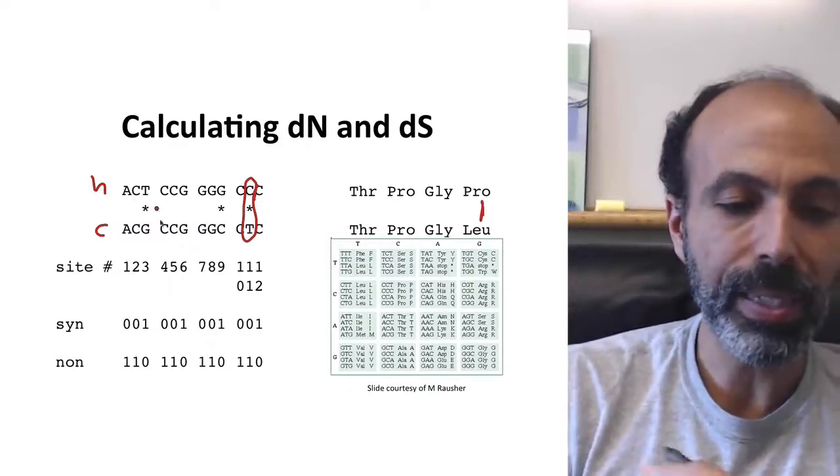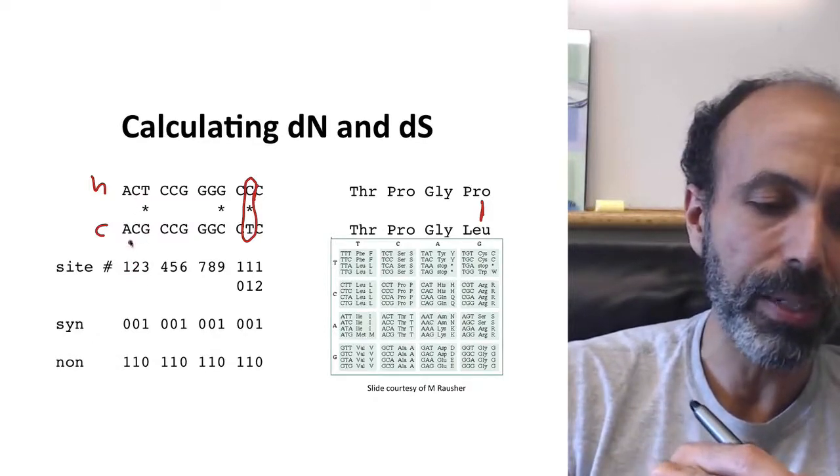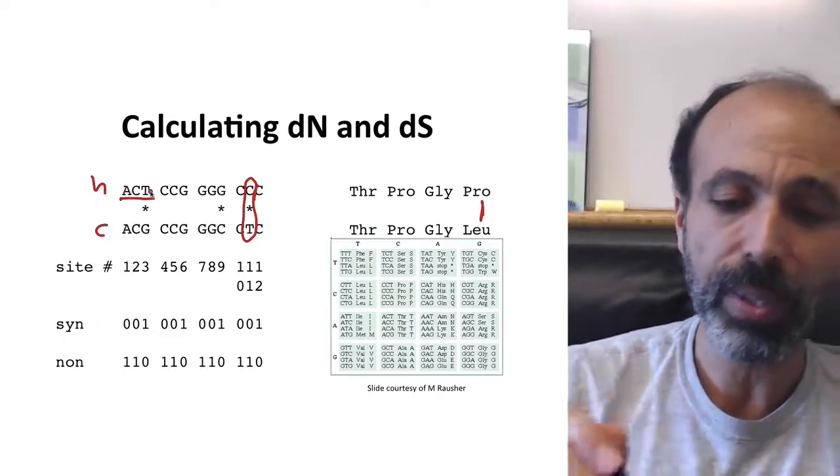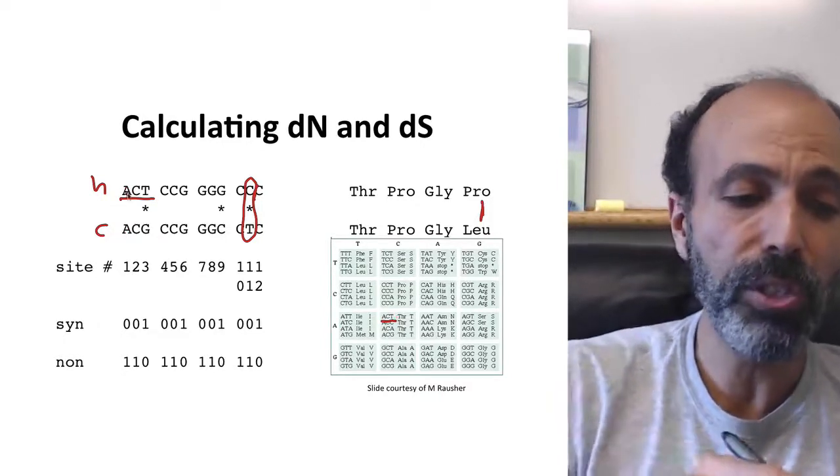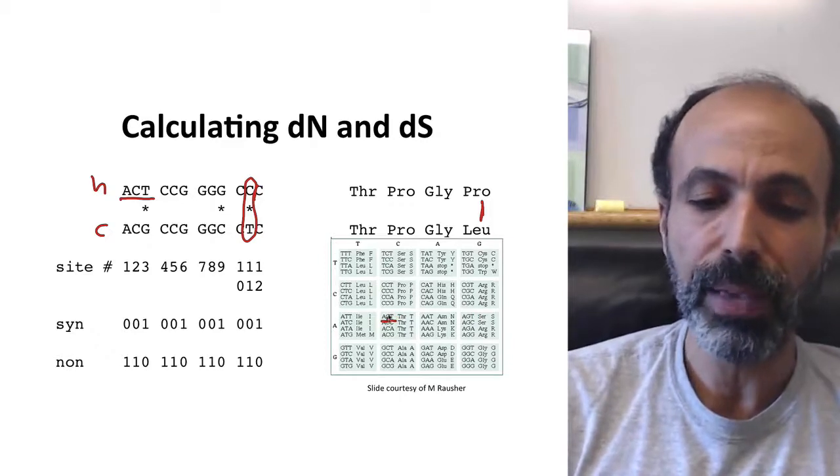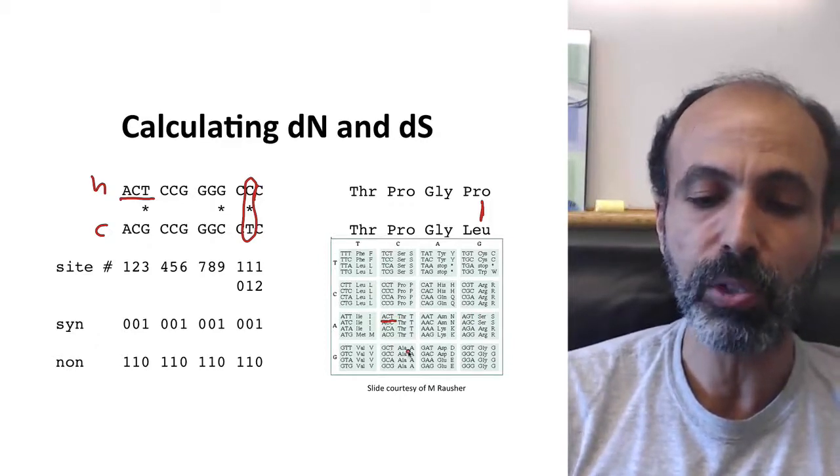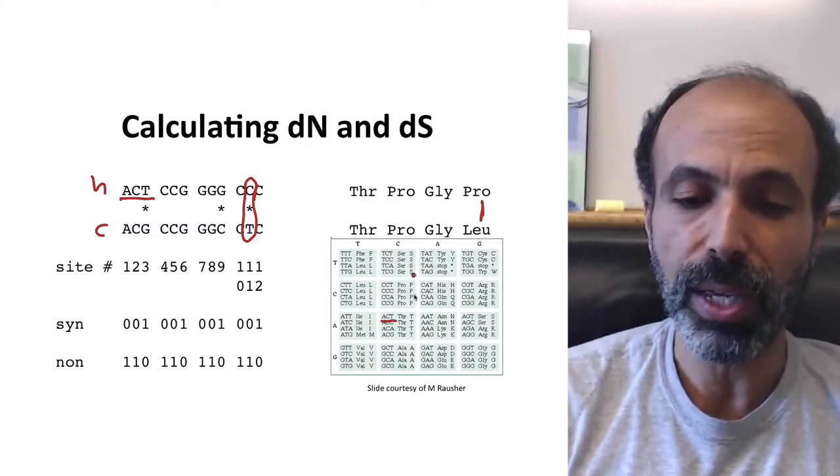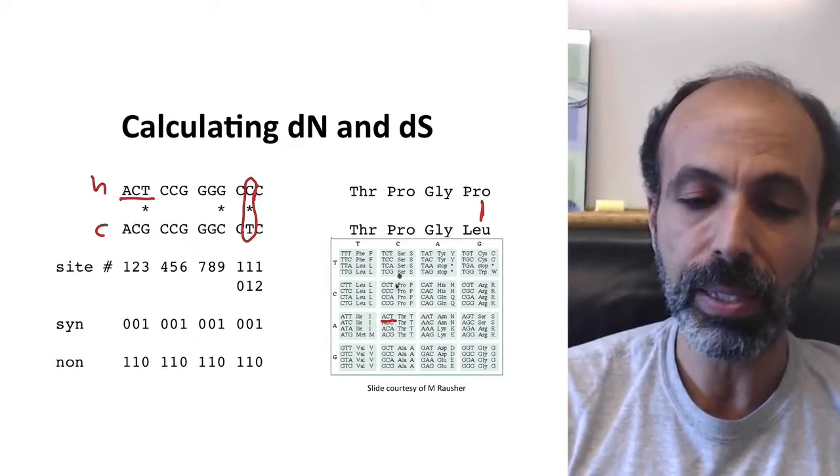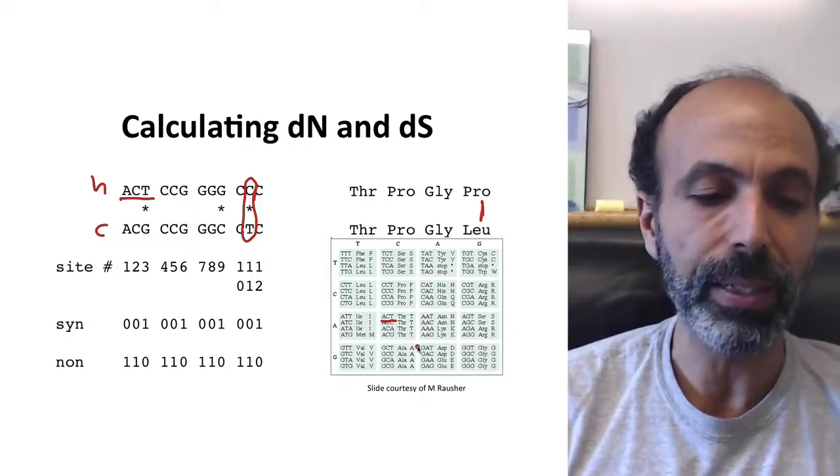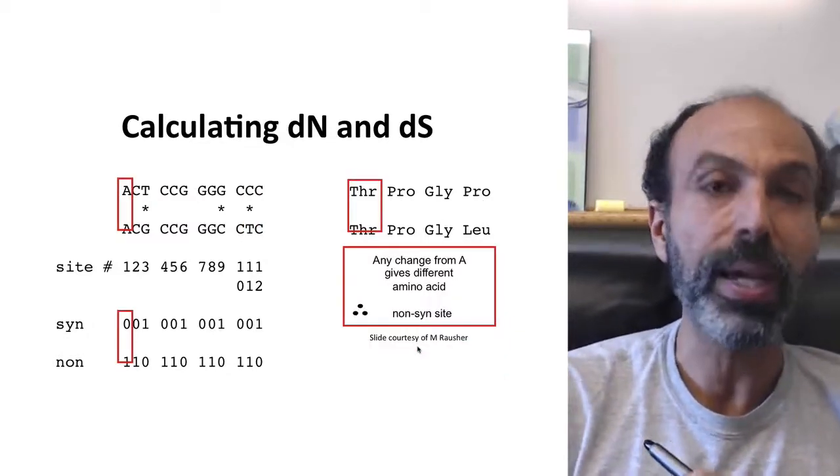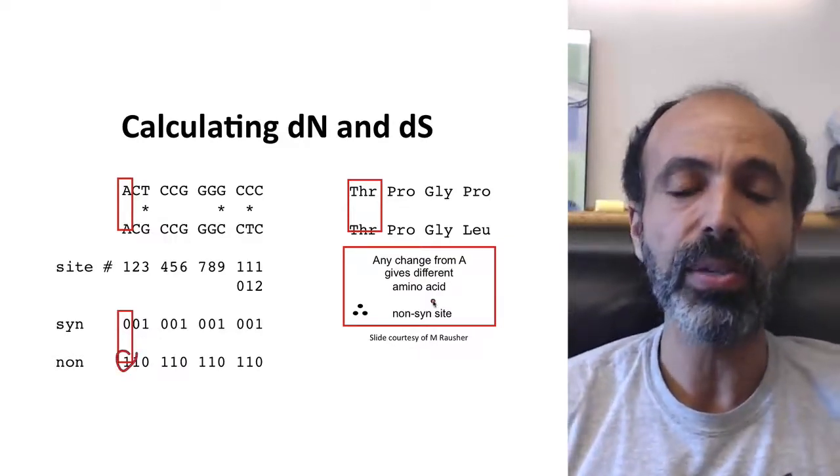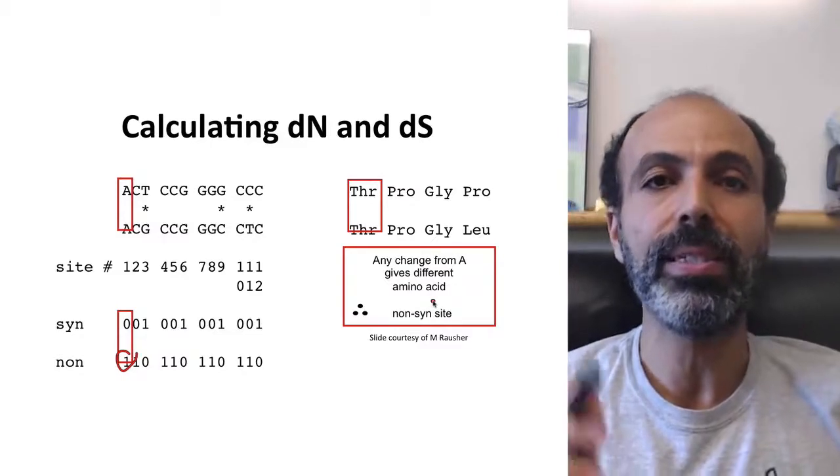So let's start walking through. So looking at ACT versus ACG, what would happen in terms of this first site here? What would happen if we were, let's start with this sequence. Let's say that we started with ACT, here it is in our codon table. If we change that first base to anything else, if it became CCT, TCT, or GCT, what would happen? Well, if we did any of those things, it would actually change the amino acid. TCT is a serine, CCT is a proline, GCT is alanine. So we classify this first site as a non-synonymous site. Because any change from A gives a different amino acid. This is a clear non-synonymous site.